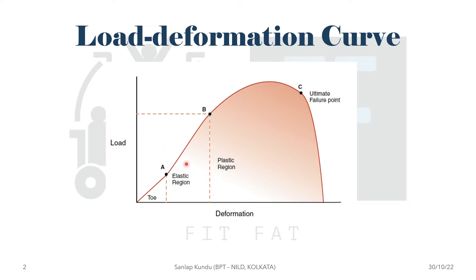In the elastic region, whenever you apply a force there will be a deformity, but as soon as you remove the load the object will return to its original state. From point B to point C is the plastic region, and point B is also called the yield point.